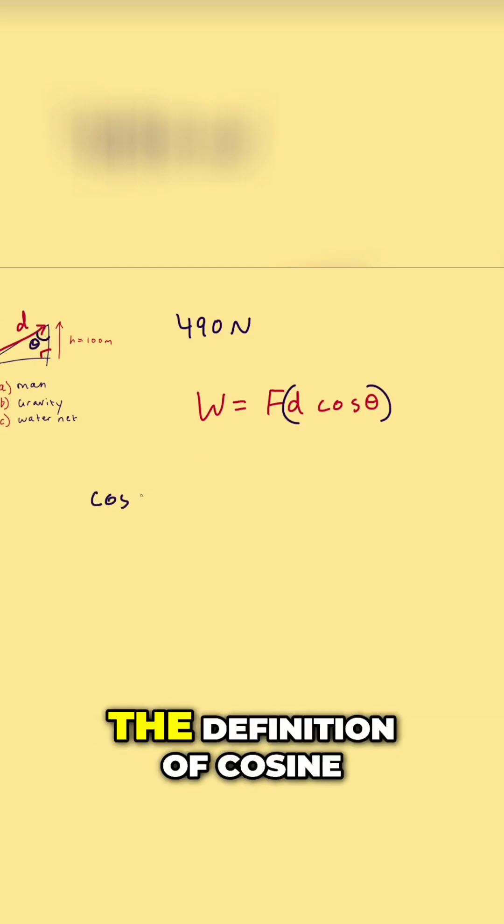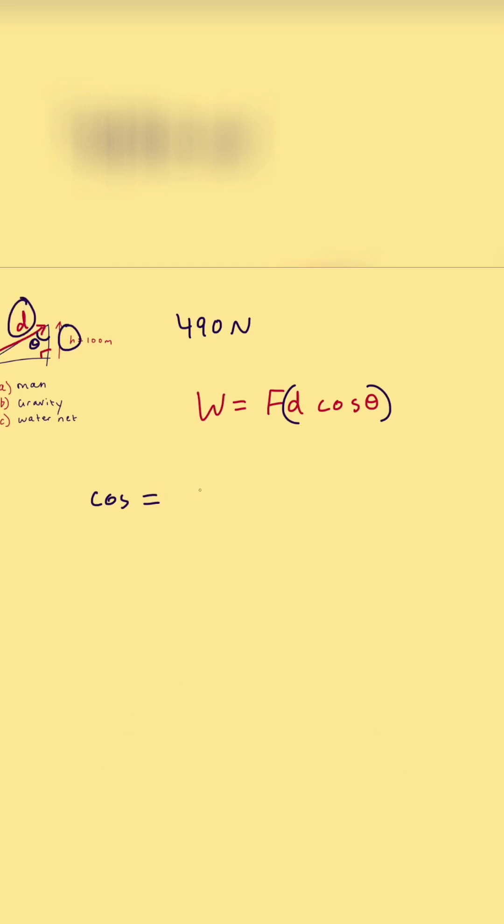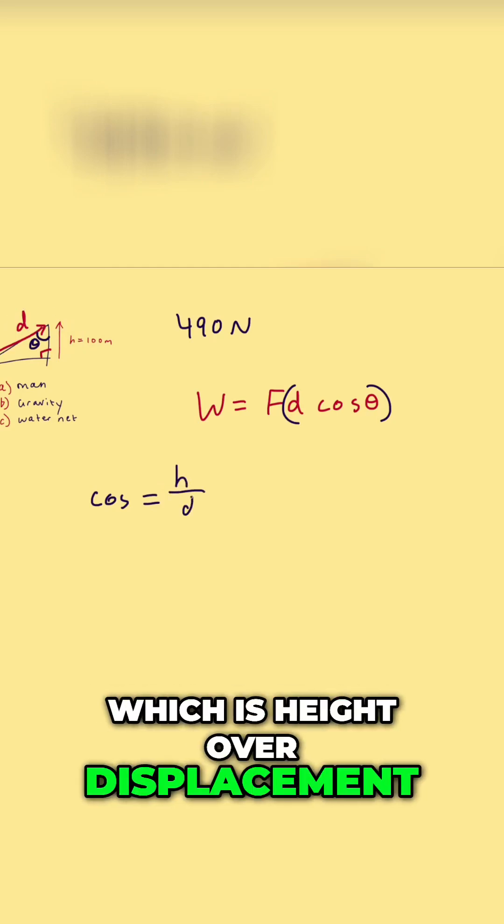And if you look at cosine, the definition of cosine is adjacent over hypotenuse, which is height over displacement.